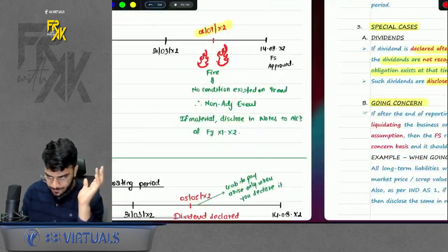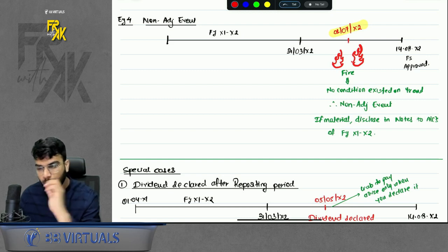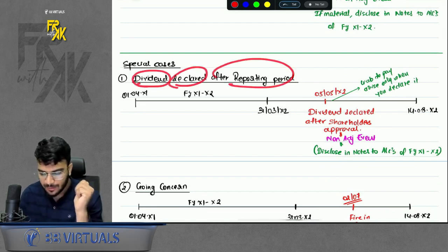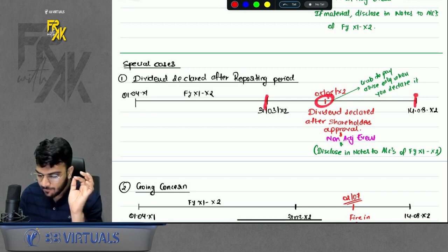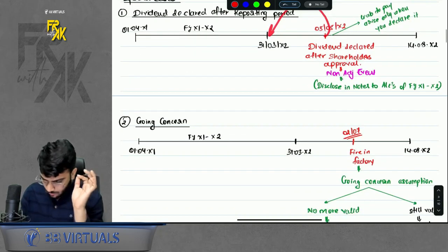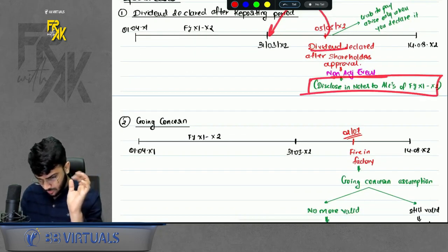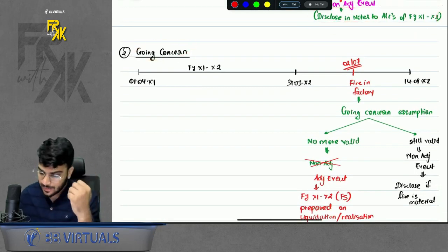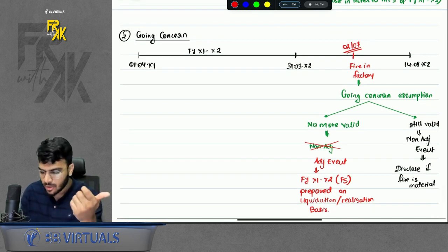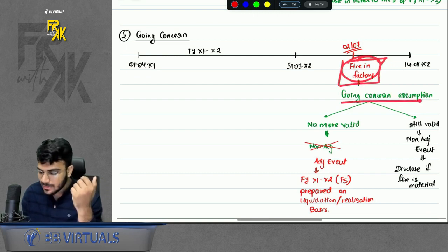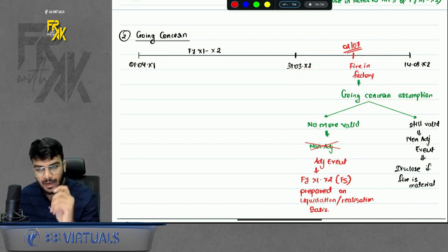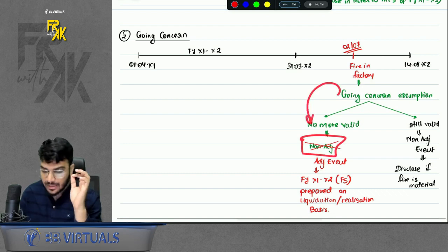There are special cases. First: dividends declared after the reporting period but before approval of financial statements are non-adjusting events because no liability existed on year end — just disclose in the notes to accounts. Second special case: going concern. If a non-adjusting event affects the going concern assumption — say fire occurred and now going concern is no longer valid — treat it like an adjusting event.